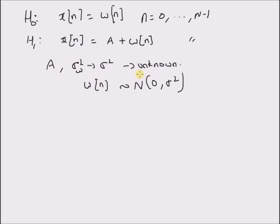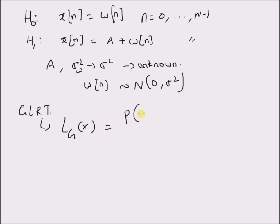So how do we construct the likelihood ratio test? The generalized likelihood ratio test is defined as LG(x), equal to the ratio of the probability distribution of the observation vector x.